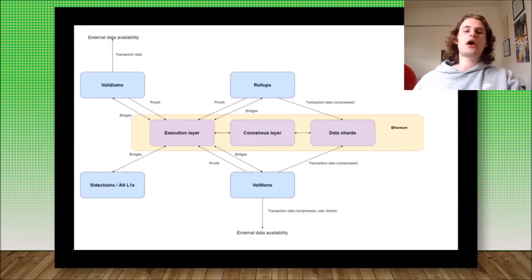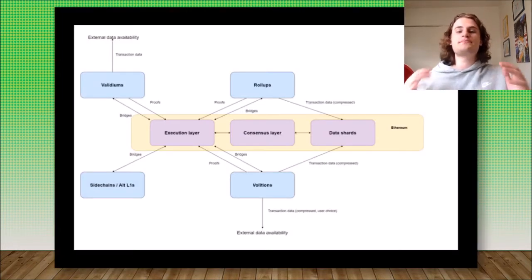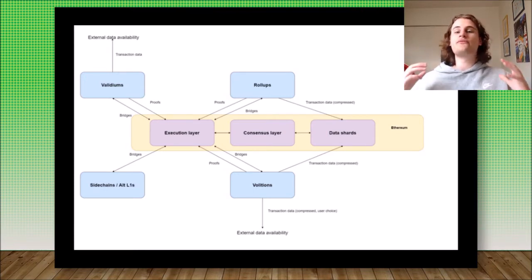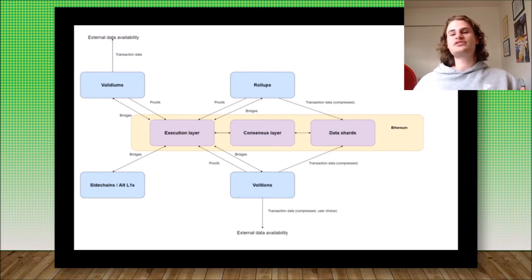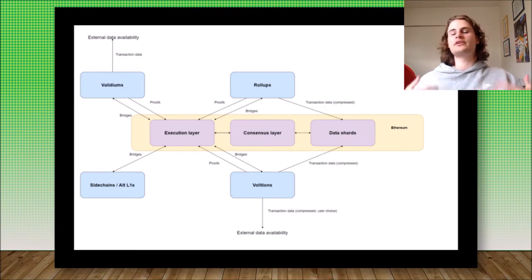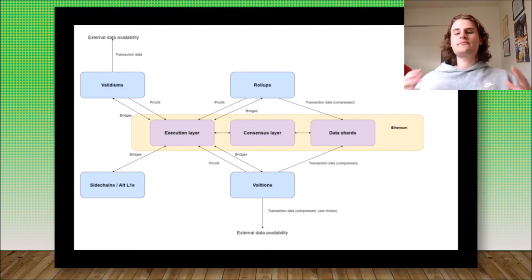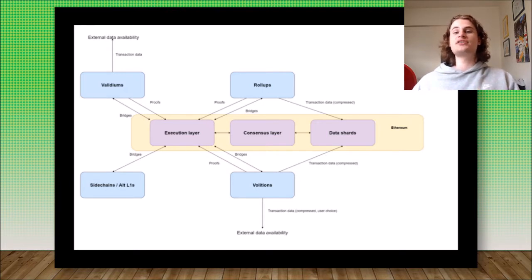The first thing that we need to go over is this picture. This picture gives a very good overview of what exactly Ethereum is, how Ethereum is scaling, and how rollups, Validiums, and Volitions all play a role in Ethereum scaling. As we can see, in the center, we have Ethereum. Ethereum has three different components to it: the execution layer, the consensus layer, and data shards.